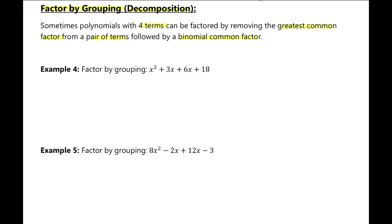Let's take a look at Example 4: factor by grouping. We have one, two, three, and four terms here. We're going to create two brackets containing the first two terms and the last two terms. We're looking for the GCF from each bracket separately. From the first bracket we can take out the common factor x. So x squared divided by x is x, plus 3x divided by x is 3. Close bracket.